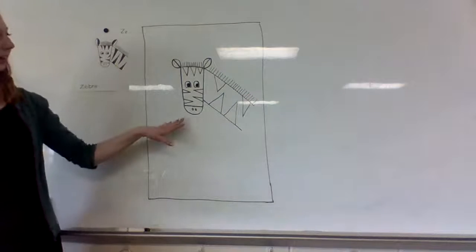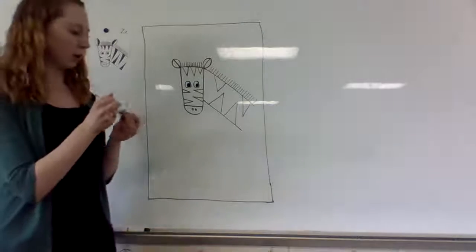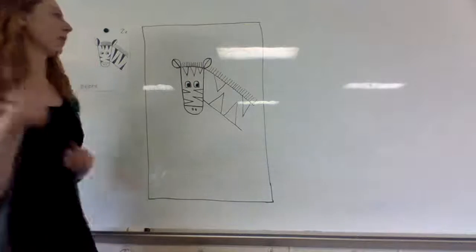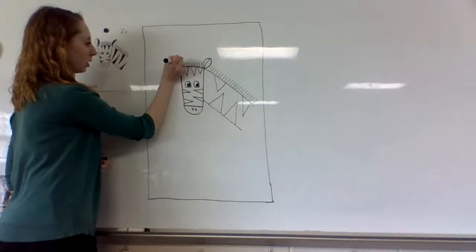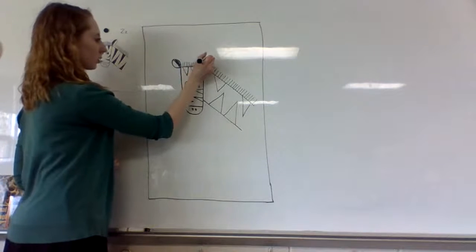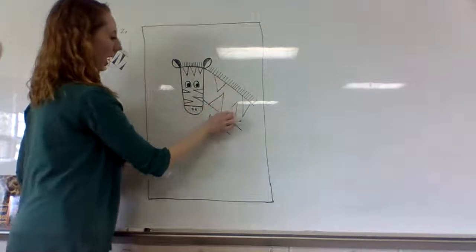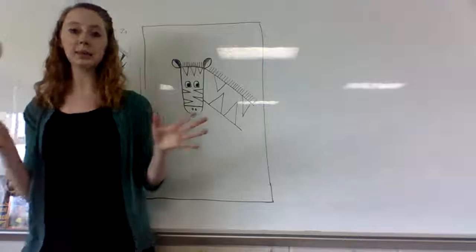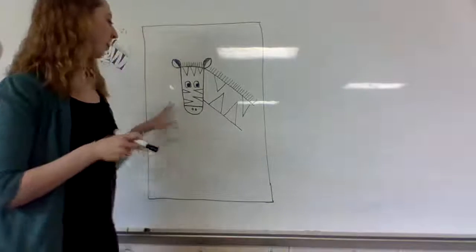That is our zebra. The last thing you can do is take out your watercolor paints. All you're really going to need is your black. You're going to want to paint the top part of his ear black, and then you're going to want to paint his stripes black as well. If you don't have a lot of black or if you don't have time to take out the paints and just want to use your crayon or your marker, that's all right. Just try to keep it nice and neat.